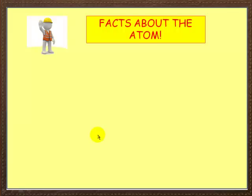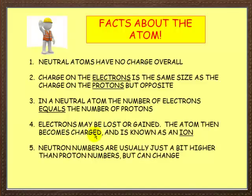Let's see some facts now about the atom. Basically, atoms are neutral — they have no charge overall. Why is that? Because the charge on electrons is the same magnitude as the charge on the protons, negative and positive. And in a neutral atom, you've got equal numbers of electrons and protons, and therefore it's neutral.